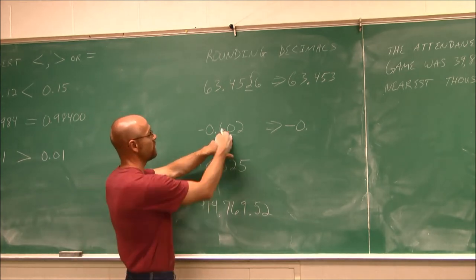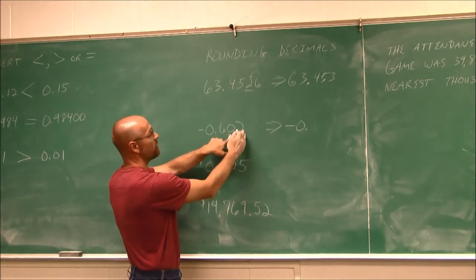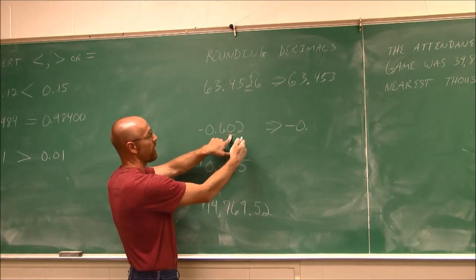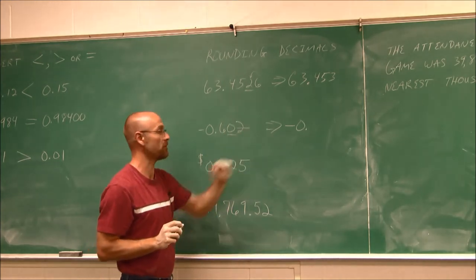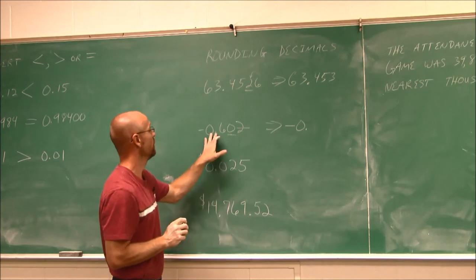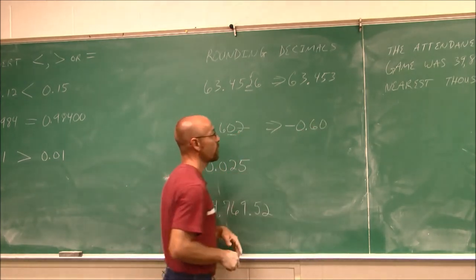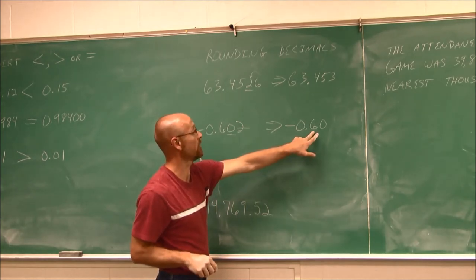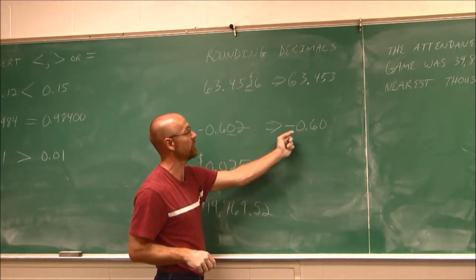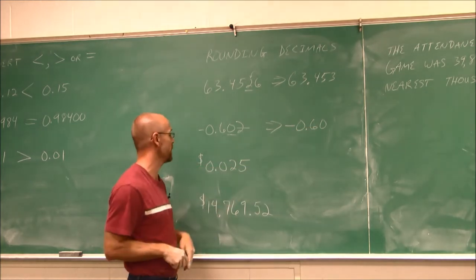To round to the hundredths, we look to the place to the right — the thousandths. We see this value is less than 5, so we round it off, which means we eliminate the values to the right. So it would be 0.60, or 60 one-hundredths. We might recognize that's the same as 6 tenths — so we'd have negative 0.60 or negative 60 one-hundredths.